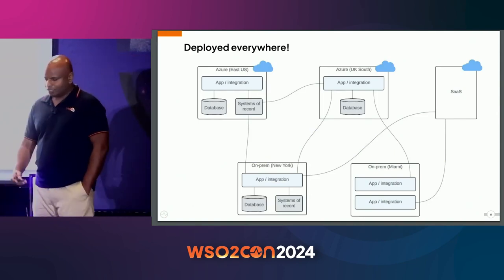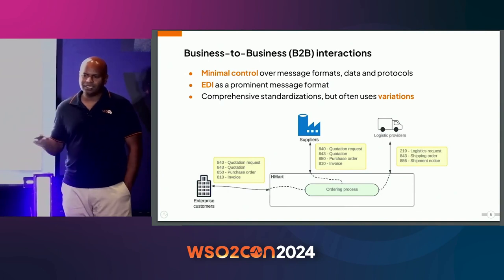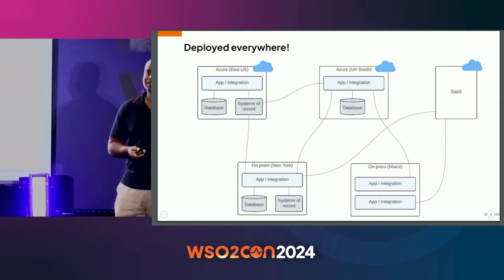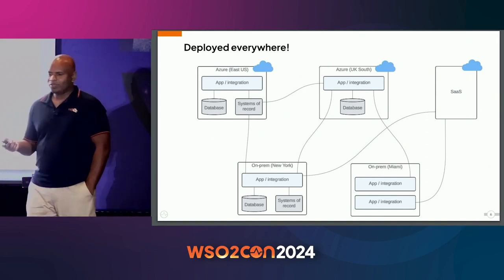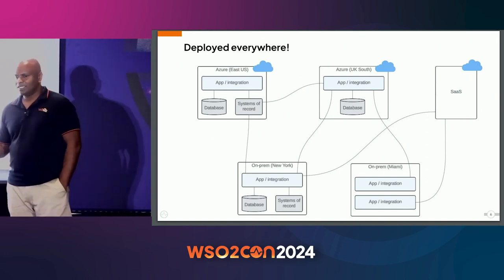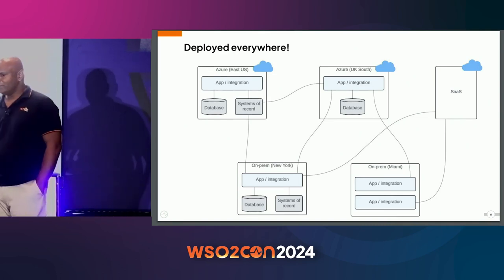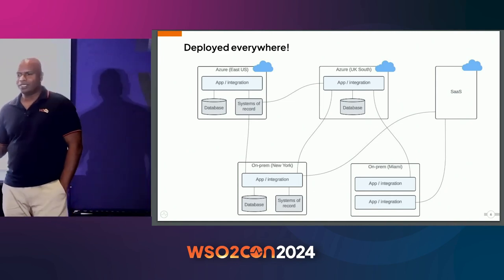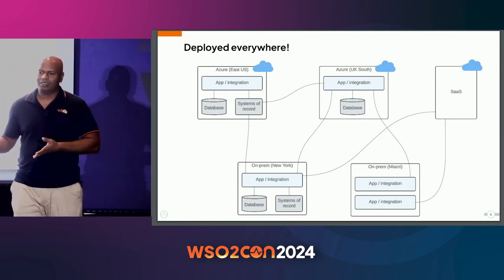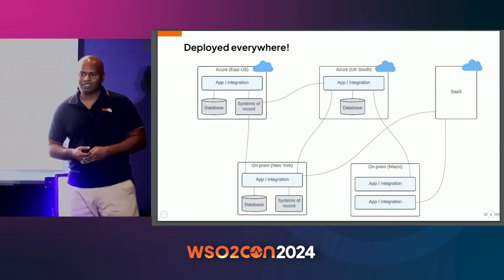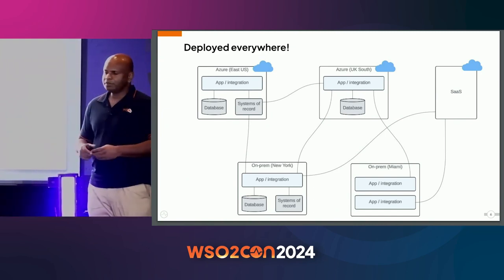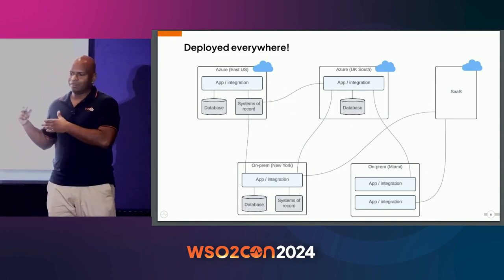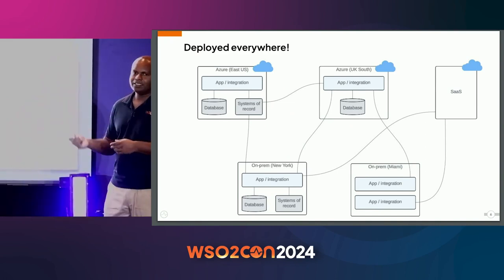Those are some of the challenges from the integration and communication perspective. When it comes to deployment, any reasonably large organization has multiple deployments — maybe multiple on-premise deployments in local data centers and multiple cloud-based deployments, including multi-cloud deployments such as one in AWS and one in Azure, and also multiple regions, for example one in UK and one in US. The technology we use to integrate, modernize, and build business applications on top of existing infrastructure should be able to work across all these multiple deployment scenarios.